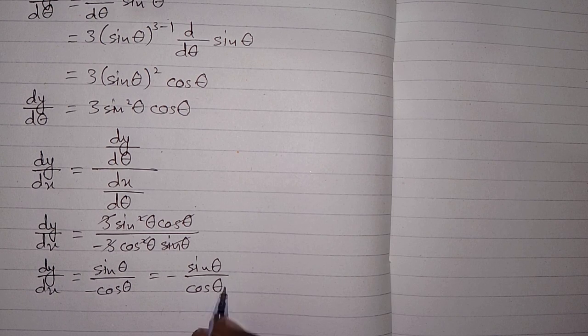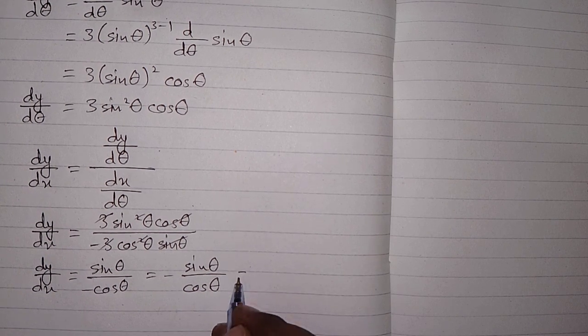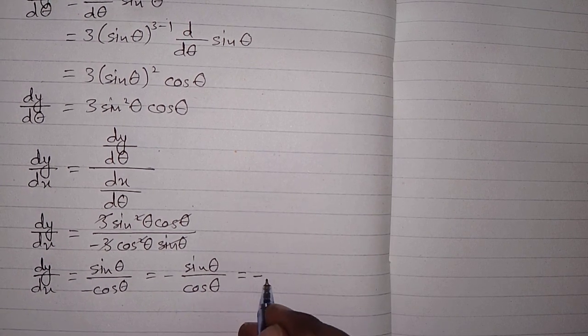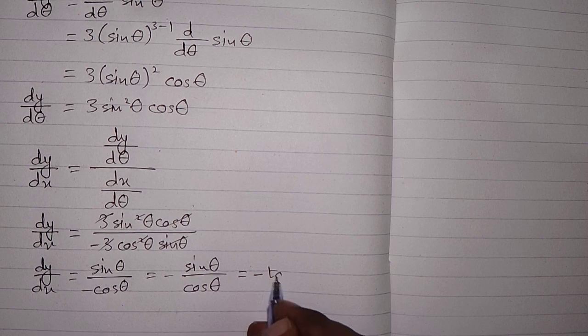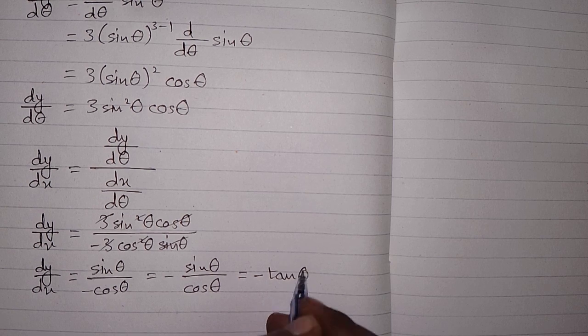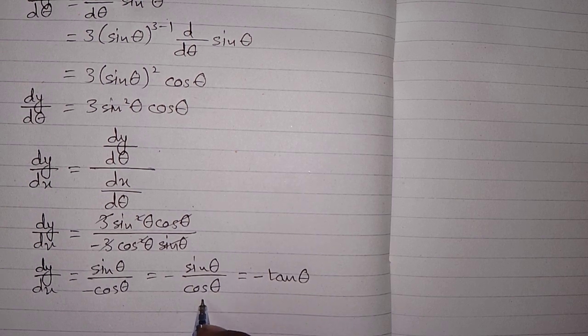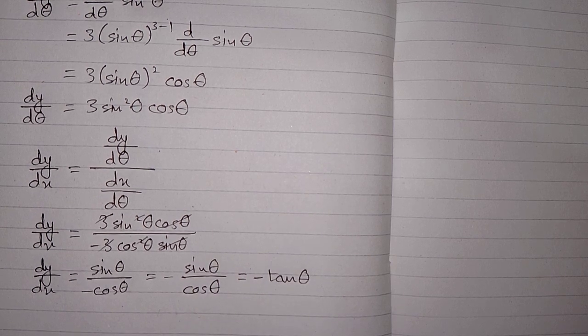So dy by dx is equal to minus tan theta, because tan theta is equal to sin theta upon cos theta.